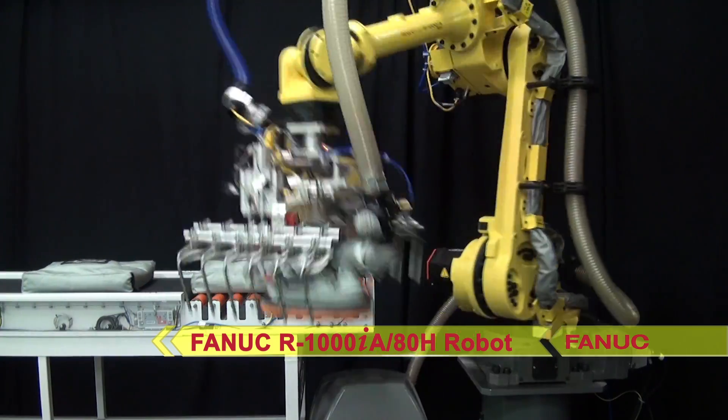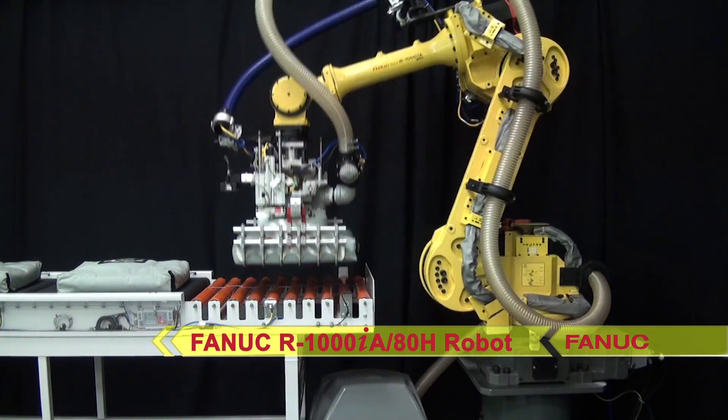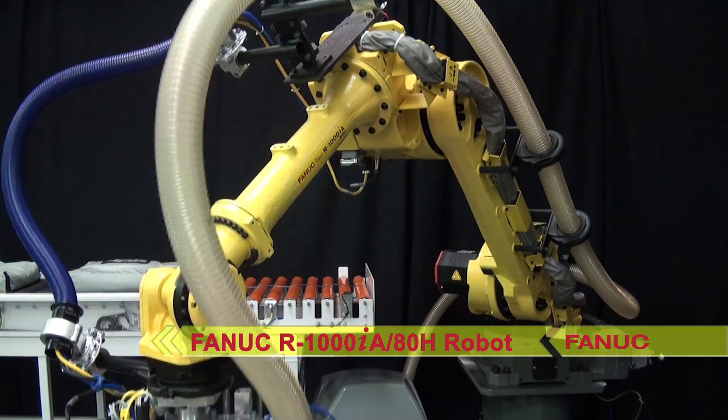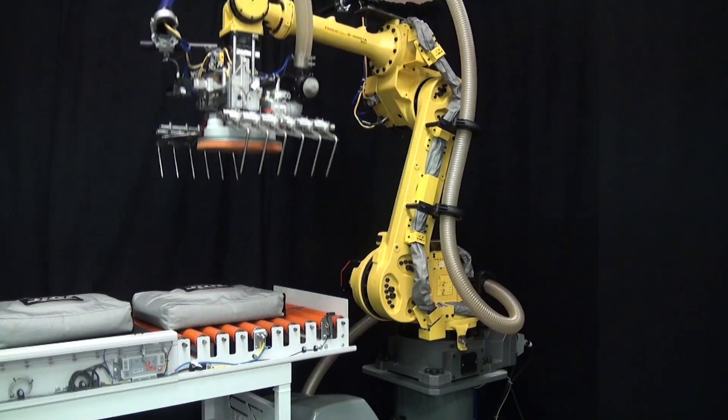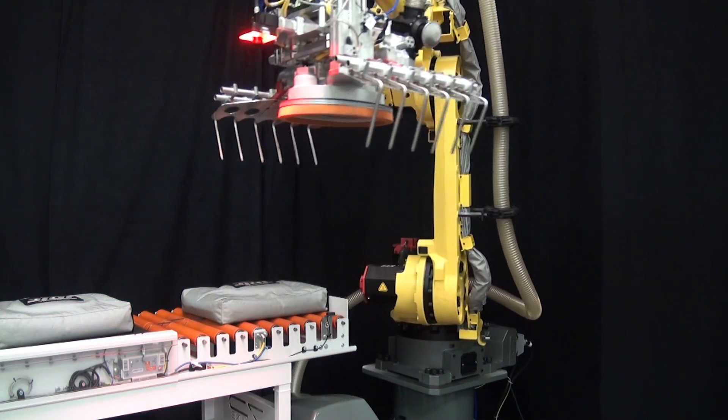The 5-axis FANUC R1000IA 80H robot features an 80 kg payload and a very strong wrist, making it ideal for heavy bag palletizing and case handling.